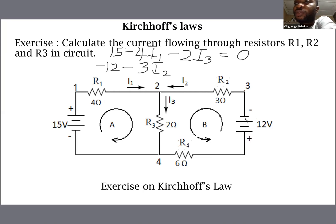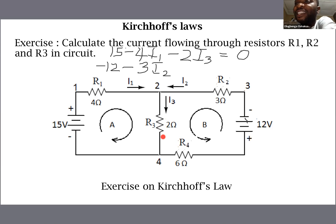Leaving R2, we arrive at resistor R3. I3 flows through R3 in a direction that agrees with our navigation around the loop, so we write minus 2I3.